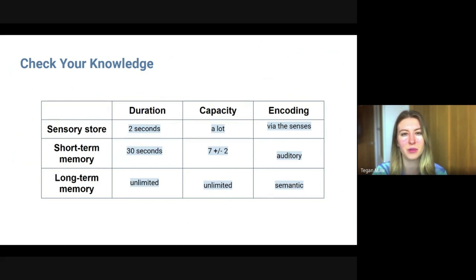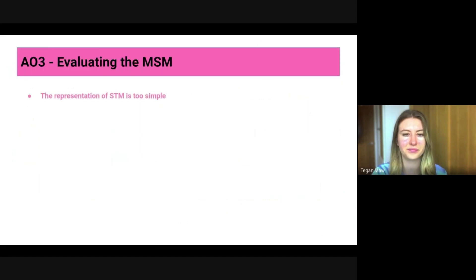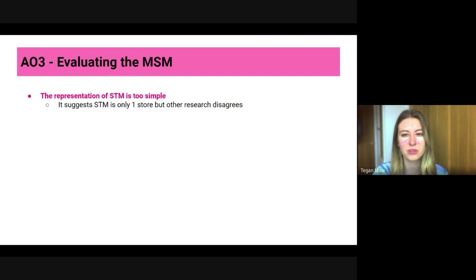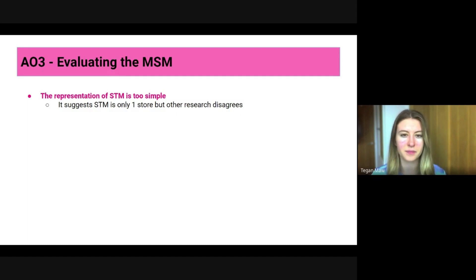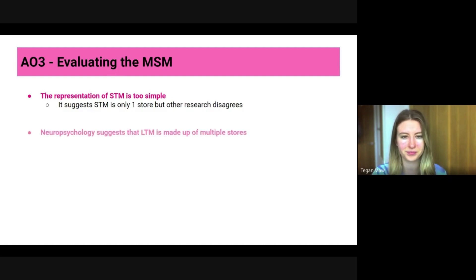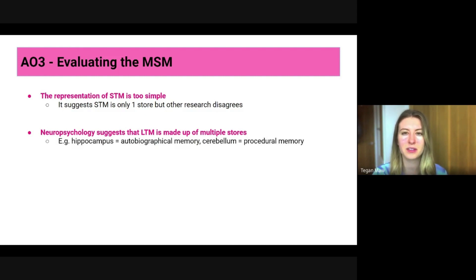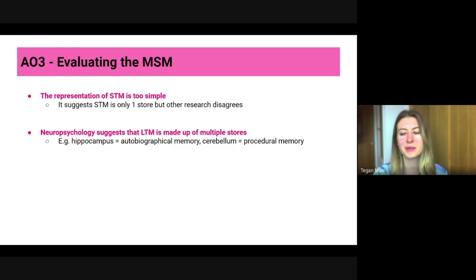You also need to know how to evaluate the multi-store model of memory. First, the representation of short-term memory is considered too simple, because the model suggests short-term memory is only one store, but other research disagrees — we can commit information that we hear, see, taste, and touch, involving different sensory stores, and some research suggests those different sensory stores persist in short-term memory. Second, evidence from neuropsychology suggests that long-term memory is made up of multiple stores: the hippocampus is associated with autobiographical memory whereas the cerebellum is associated with procedural memory, and that distinction is not represented in the model.